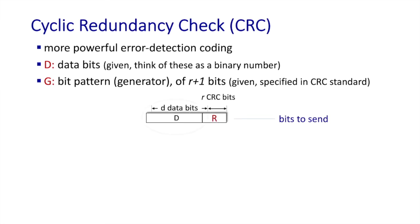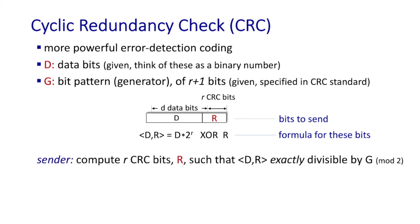So we see here the d data bits that we want to send along with the r CRC bits. If we think about these d plus r bits, the given bits capital D and the CRC bits capital R, we compute the d plus r bits that we want to send first by left shifting the data bits to the left r positions and then adding in, or XORing in, the r CRC bits. And here's what the sender does. It's going to compute the r CRC bits such that this quantity here is exactly divisible by the agreed upon generator G.